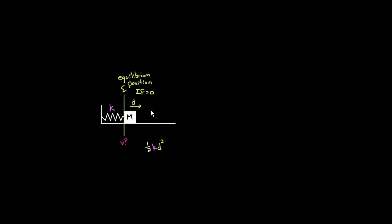There's no kinetic energy to start because we released the mass from rest. As the mass flies to the left, it gains kinetic energy — the spring energy turns into kinetic energy. When the mass gets to the equilibrium position, d equals zero, so there's no spring energy, and all the spring energy has turned into kinetic energy. Solving for v, the speed at the equilibrium position is the square root of k over m times d squared.